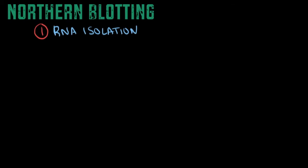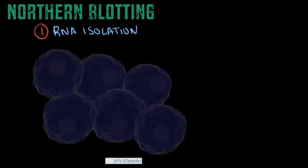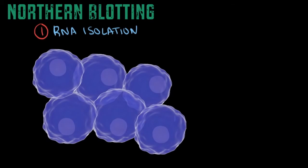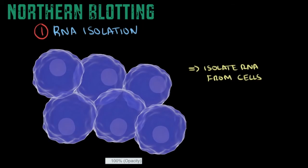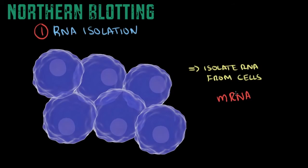In order to study an RNA mixture, you need to extract them from cells of your choice — you will isolate RNA molecules from cells. In most cases, we study mRNA, or messenger RNA molecules, using northern blotting.